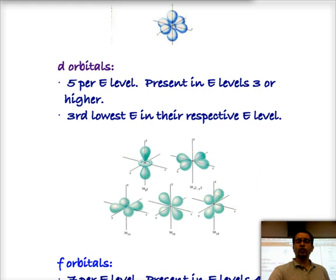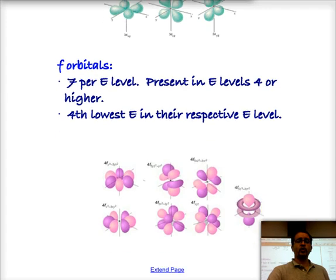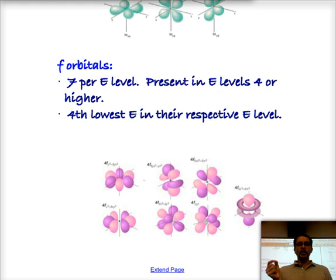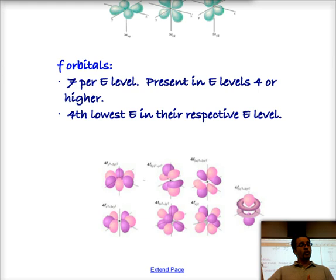The final type of orbital is the F orbital. F orbitals are present in energy levels four and above, and they come in groups of seven. Anytime you have one of them, you get all seven, regardless of whether they have electrons in them or not. For the orbitals we're studying, F orbitals are the highest in energy — the fourth lowest — making the ranking: S, P, D, then F.